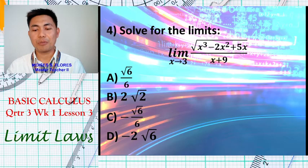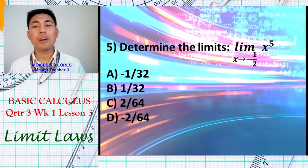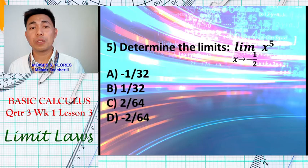For the fourth guide question, solve for the limit of the square root of (x³ − 2x² + 5x) / (x + 9) as x approaches 3. Choices: √6, √6/6, −√6/6, −2√6, or −2√6. The last guide question: find the limit of x raised to 5 as x approaches negative one-half. Choices: −1/32, 1/32, 2/64, or −2/64.